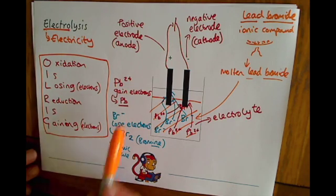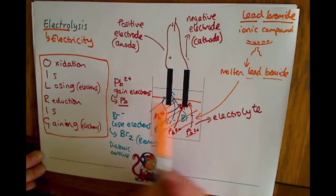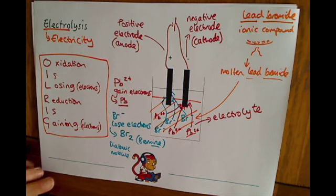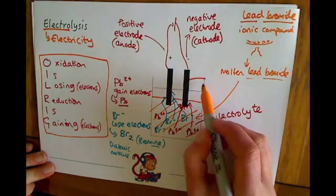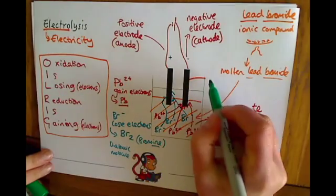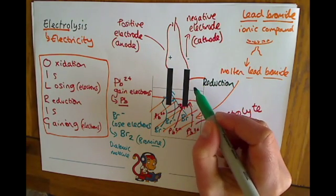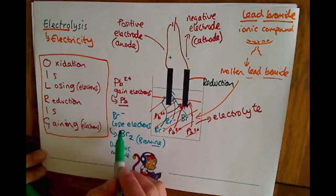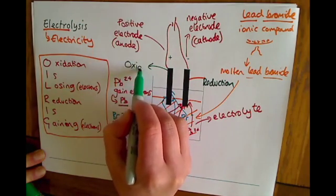Applying OIL RIG to our example: the lead ions are gaining electrons at the negative electrode, so this is where reduction is happening — reduction occurs at the negative electrode. On the positive electrode, the bromide ions are losing electrons, so this is where oxidation is occurring.